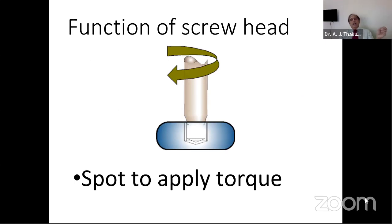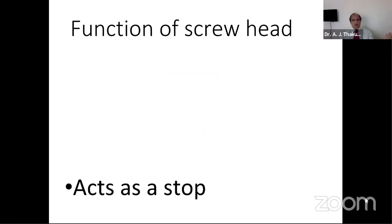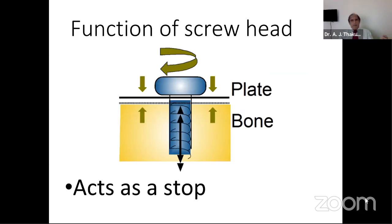Starting with the head — it functions as a place where we can apply torque. Applying torque or torsion to the screw head is essential for inserting the screw. It also acts as a stop. When used with a plate, once it reaches the end, it pushes the plate towards the bone and creates a compressive force so the plate and the bone stay together. It converts the torque or twisting force into a compressive force.